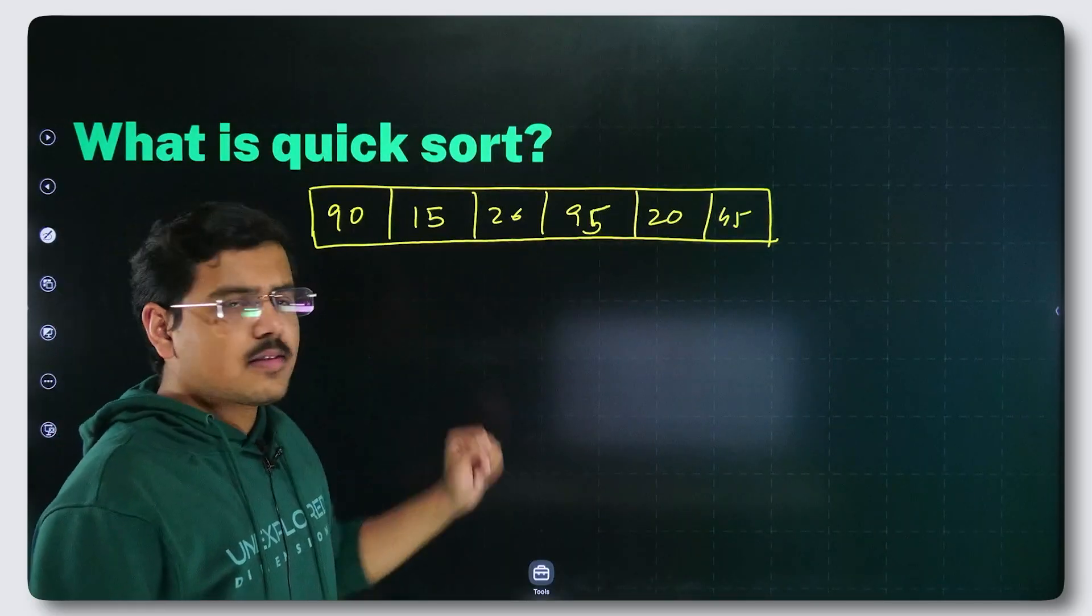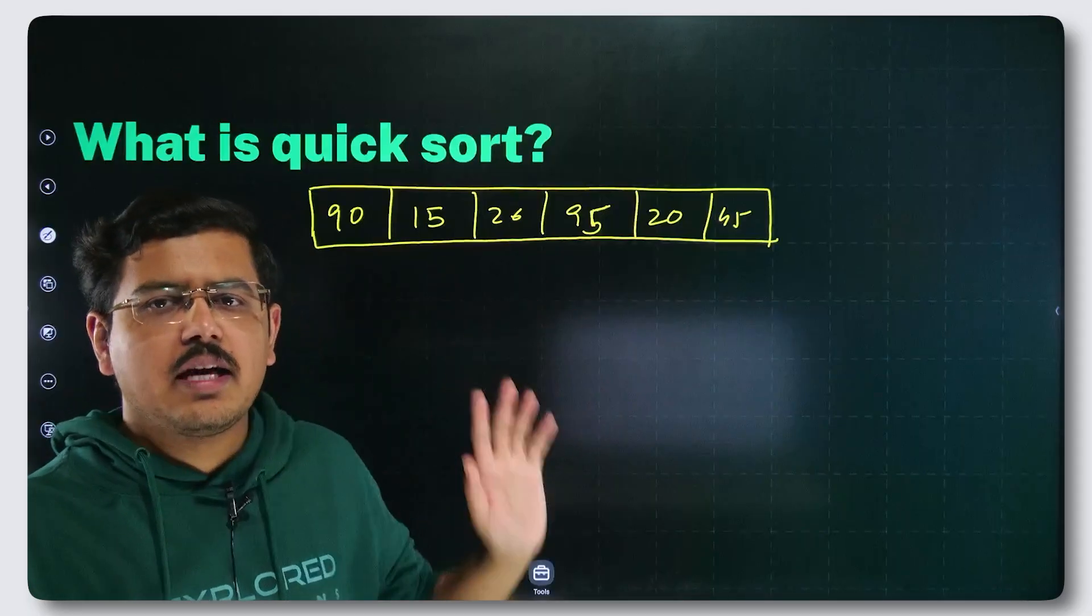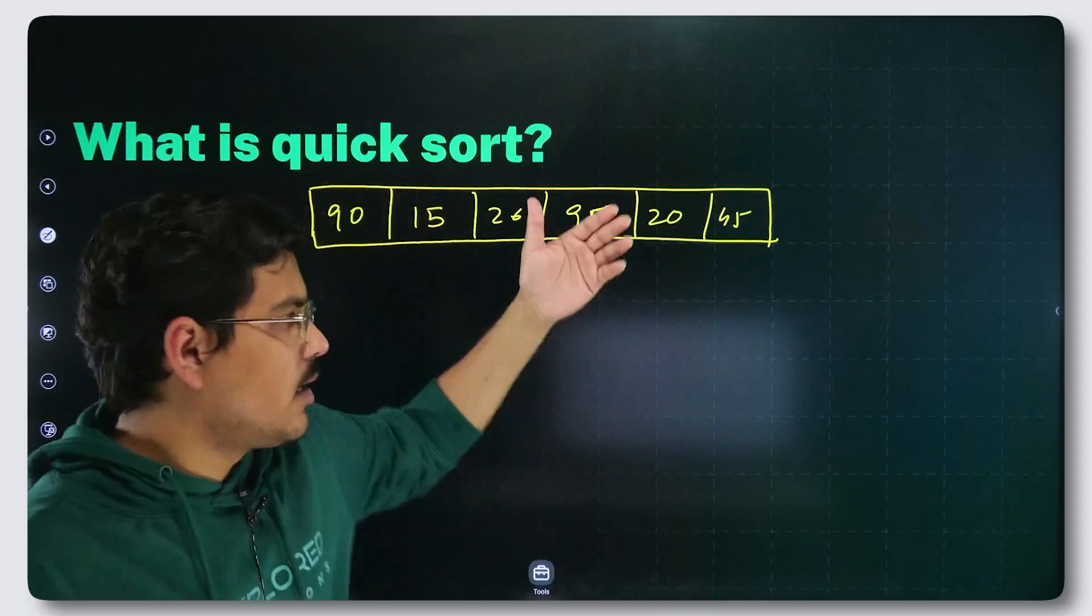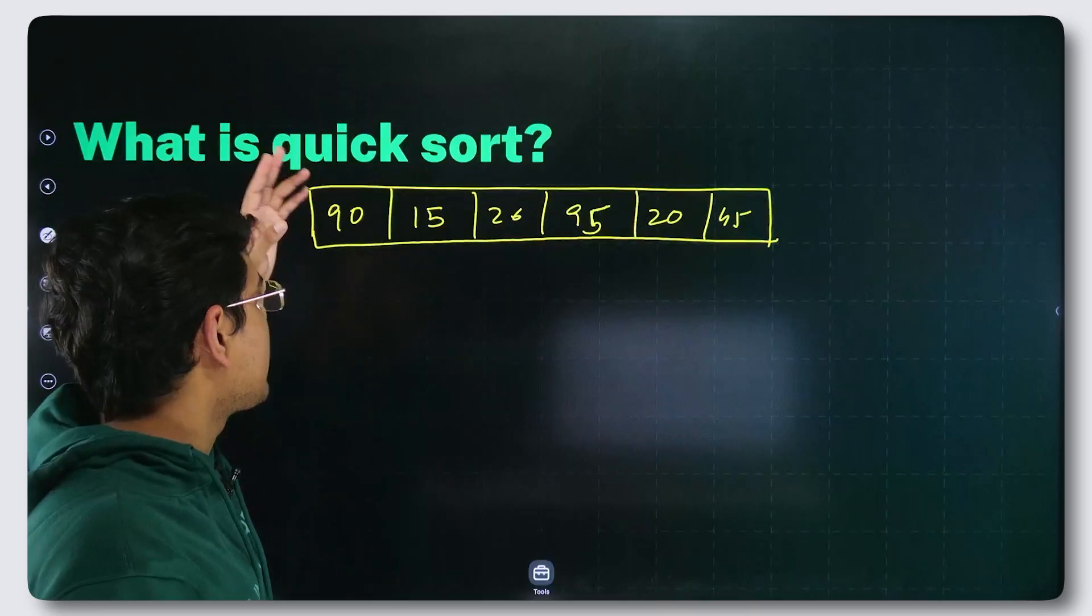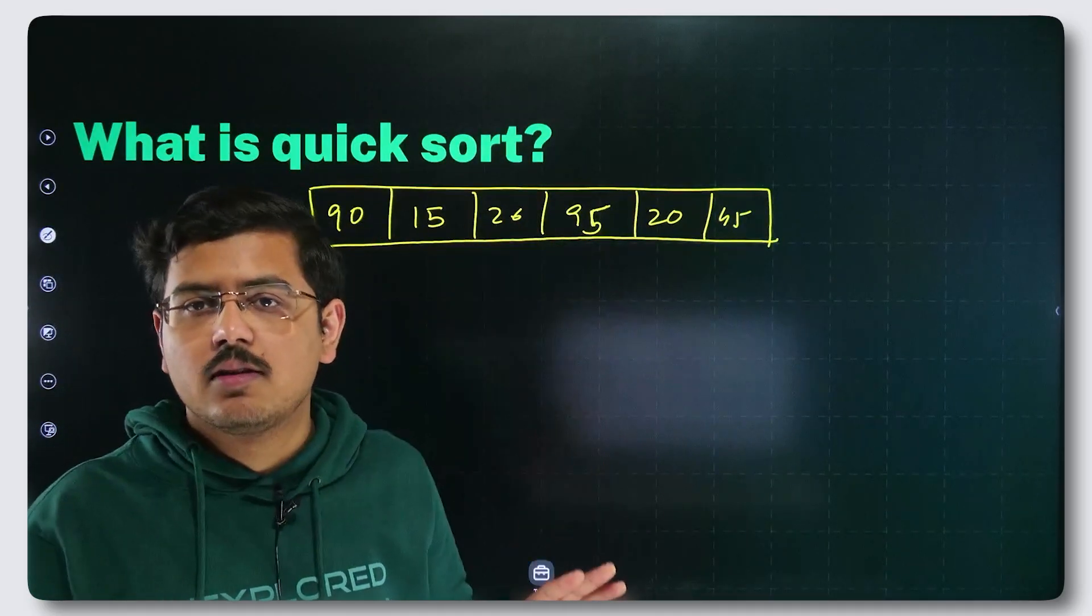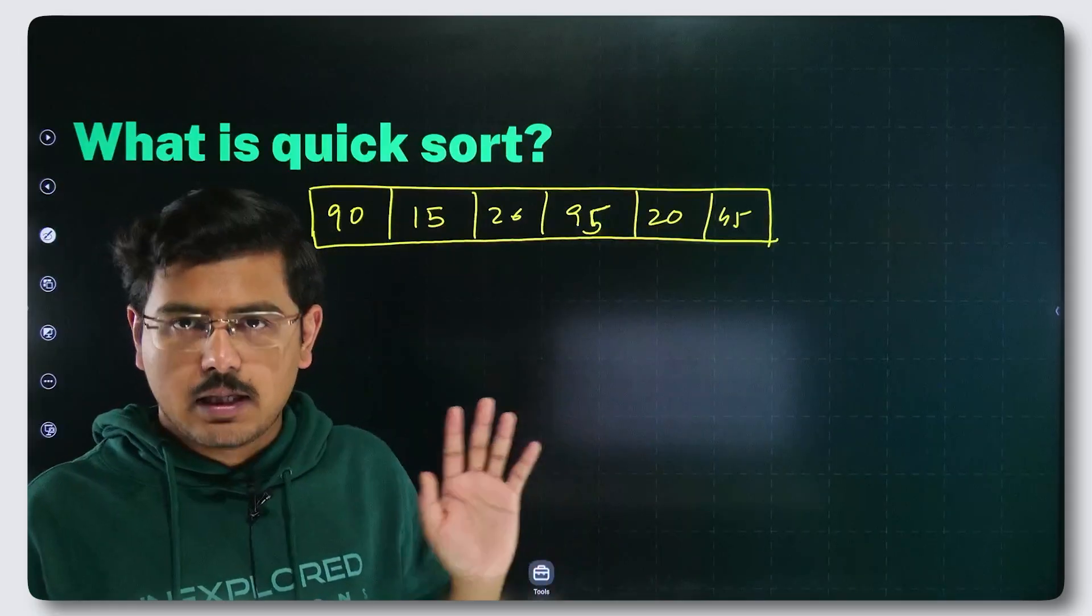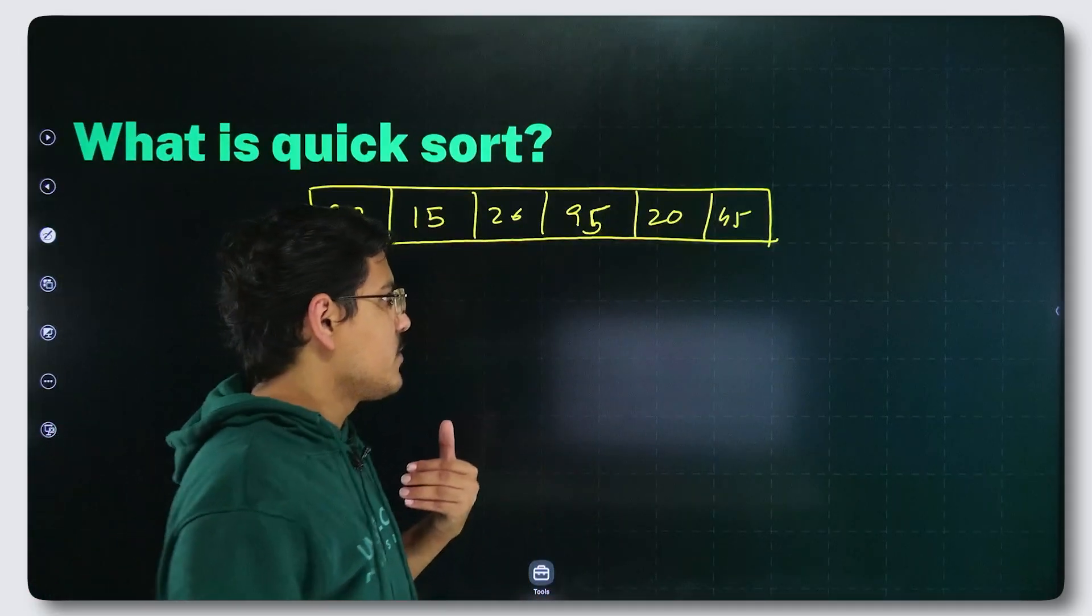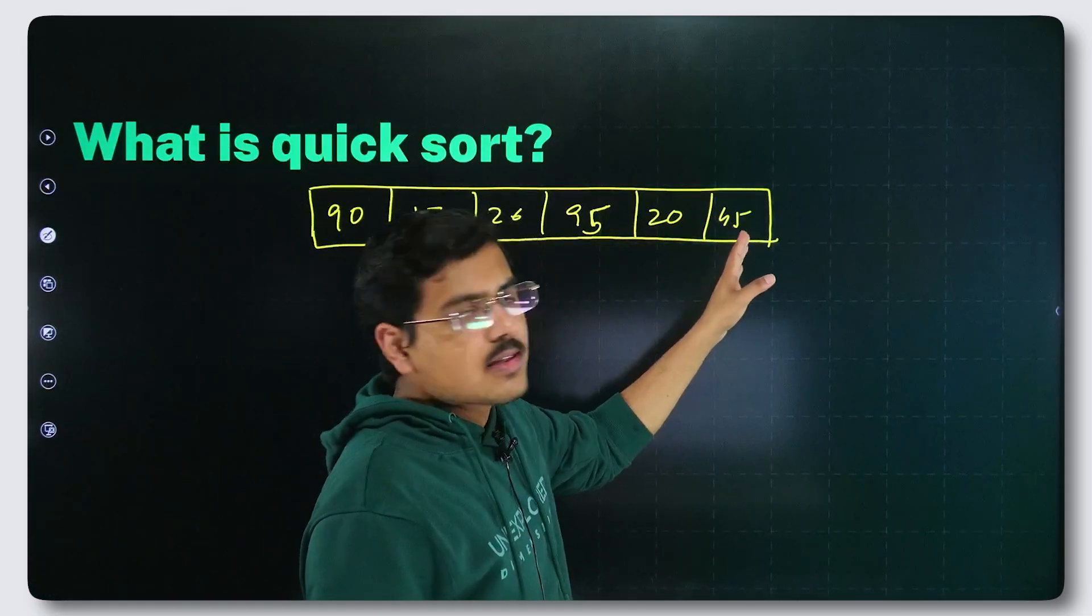Now in this case, anything can be selected as pivot. You can select the last element as pivot, the middle element, the first element, or any random element as pivot.